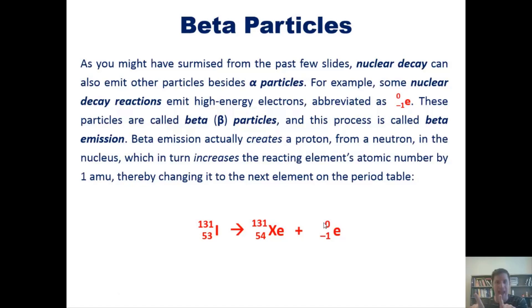What happened is that neutron turned into a proton by giving off an electron, or beta particle. So a neutron transforms into a proton and an electron. That electron is emitted as a beta particle, and that proton changes the element's identity, in this case from iodine to xenon. This type of radioactive decay is called beta emission.